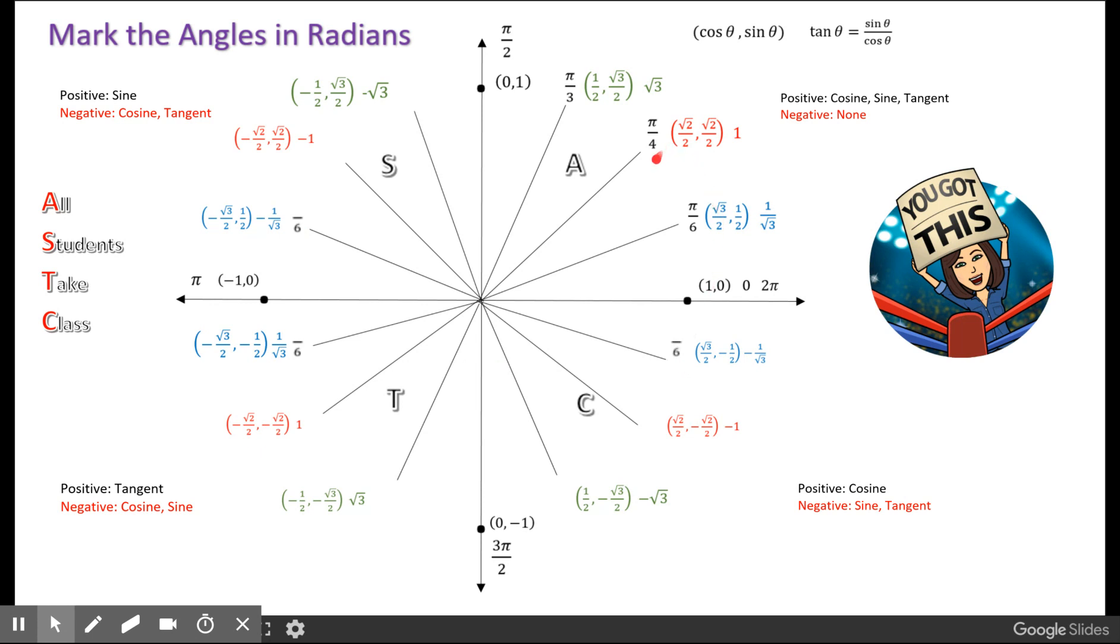All the reference angles for pi over 4 are going to have a denominator of 4. And all the reference angles that go with pi over 3 are going to have a denominator of 3.